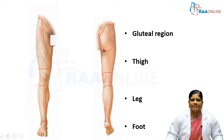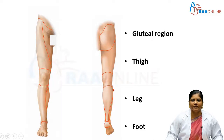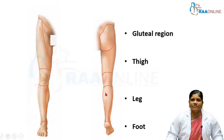In the posterior aspect, this is the thigh region. Just above the thigh is the gluteal region — the prominent buttock area. Just below the thigh, the posterior aspect of the knee is called the popliteal area. Beneath that is the leg region, where we can see bulky muscles called calf muscles, and below that is the heel and foot region.